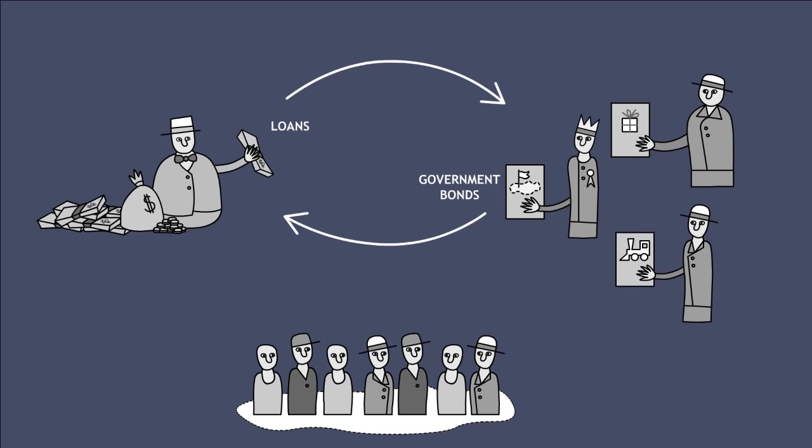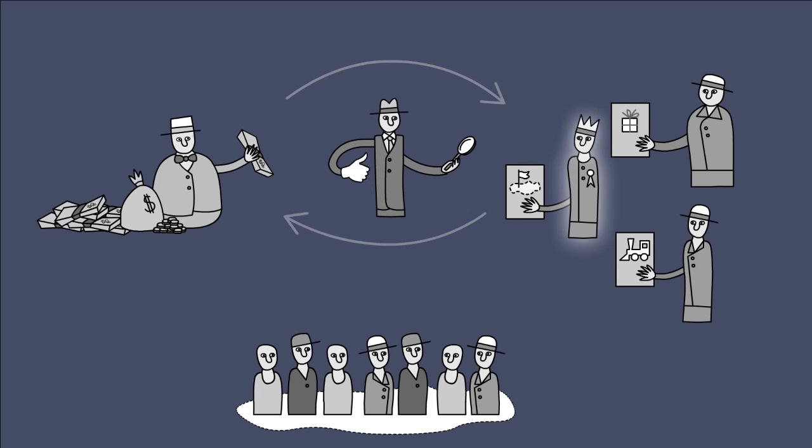States and companies that take out loans are called issuers. This is where the rating agencies come into play. In their role as auditor of the creditworthiness of companies, financial products and governments, they have substantial influence on international capital flows. This is particularly problematic in relation to nations.